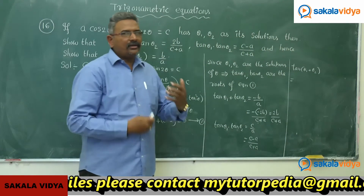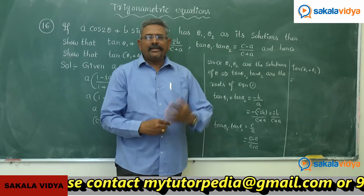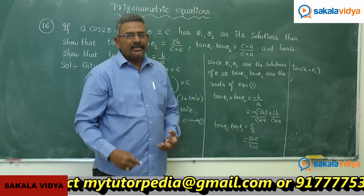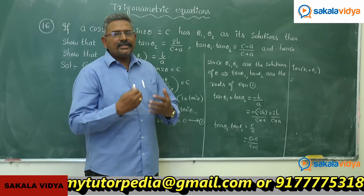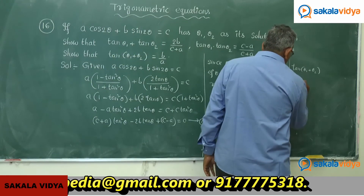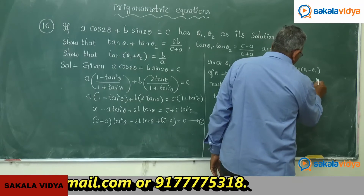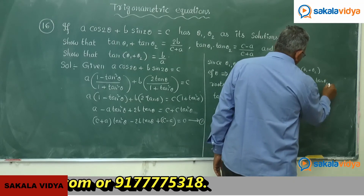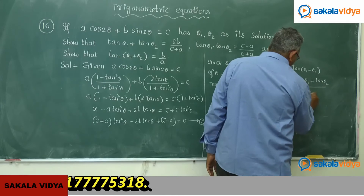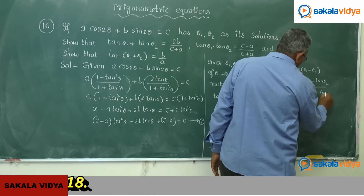Now let us find tan(θ₁+θ₂). From compound angles, we have the formula: tan(A+B) = (tan A + tan B)/(1 − tan A·tan B). Using that formula, this can be written as: (tan θ₁ + tan θ₂)/(1 − tan θ₁·tan θ₂).